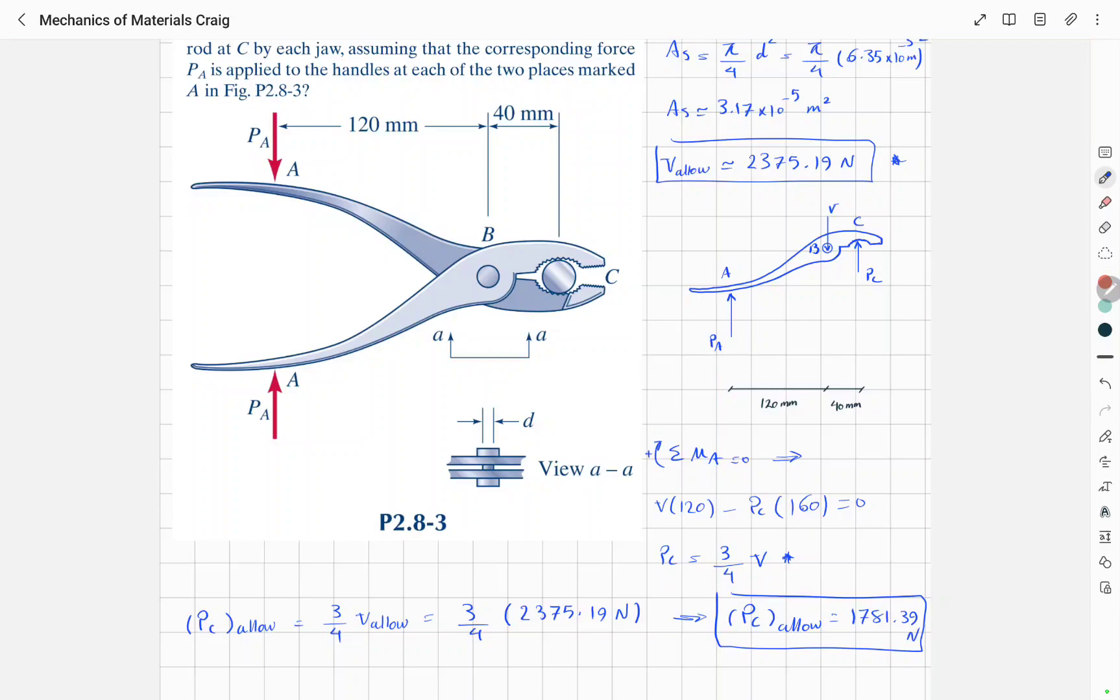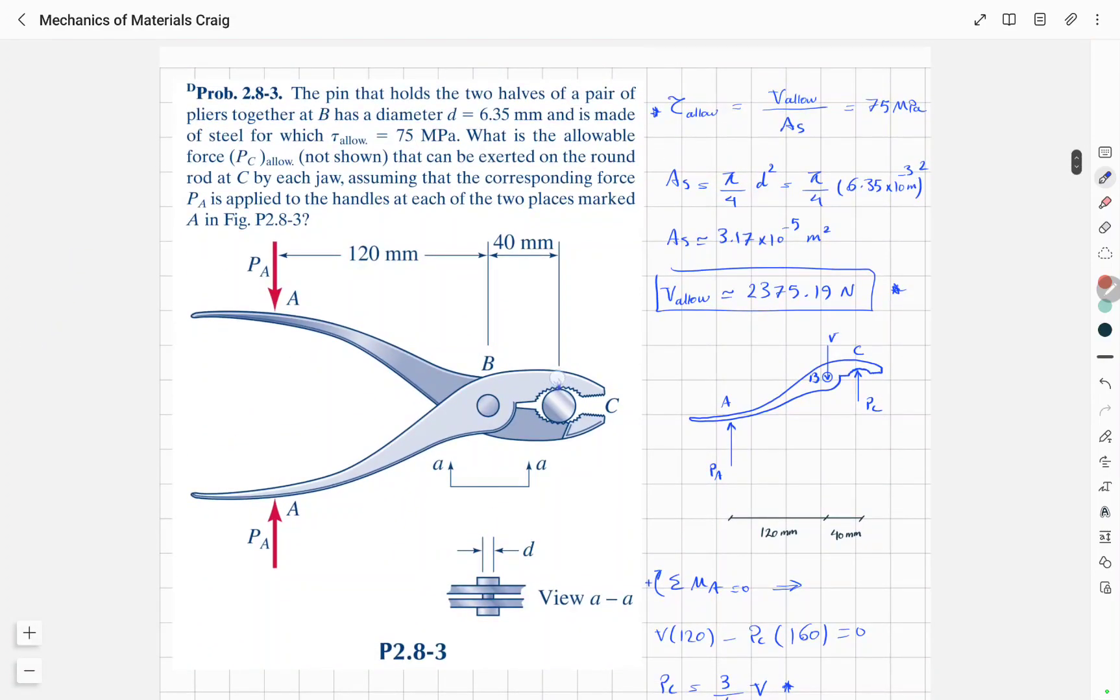So this will be the maximum load that can be applied to the rod here at point C, so that the shear stress in this pin doesn't exceed 75 megapascals.